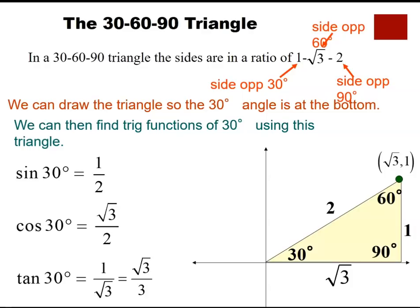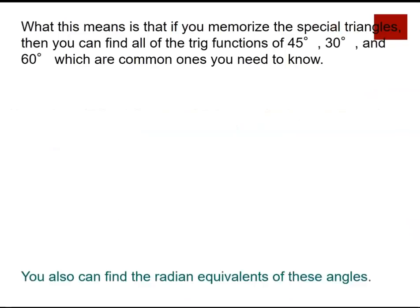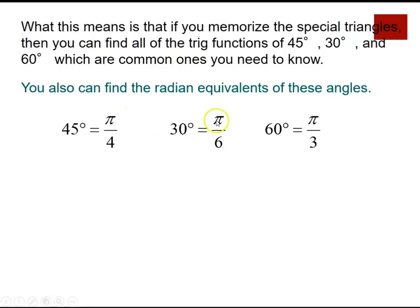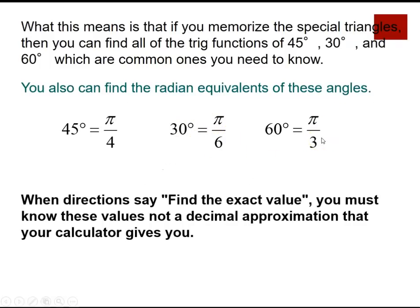These are the special triangles and the special angles you will use to solve trigonometric identities. Memorizing them lets you easily find sine 45, cosine 45, sine 60, and their radian equivalents: pi over 4 for 45°, pi over 6 for 30°, and pi over 3 for 60°. When asked for an exact value, do not use a decimal approximation from your calculator.